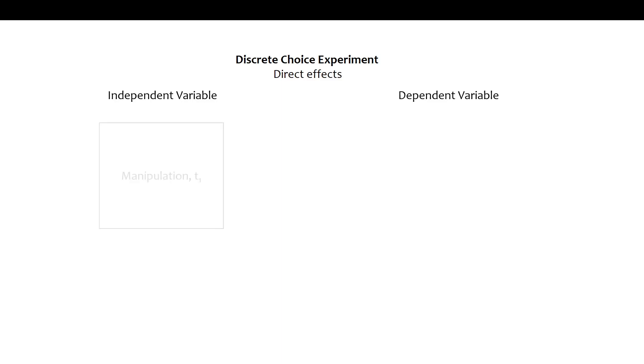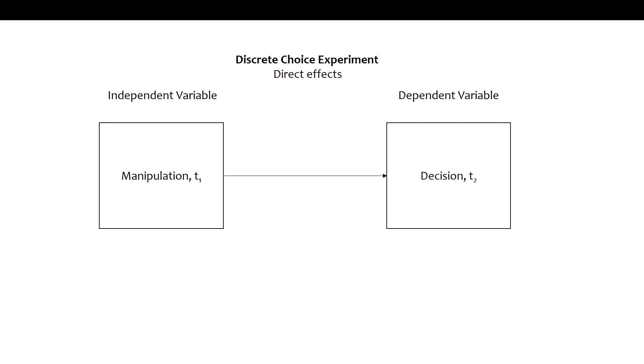The first type is a direct effect: you have an independent variable and a dependent variable. The question from the student was: what is the independent variable in a discrete choice experiment, and what is the dependent variable? The independent variable is the manipulation — something we manipulate because it happens before; we do it intentionally.